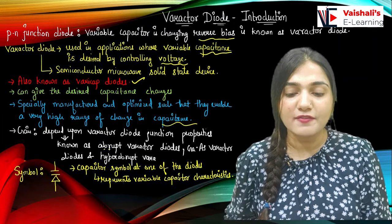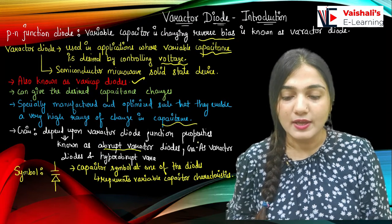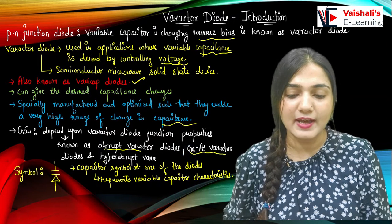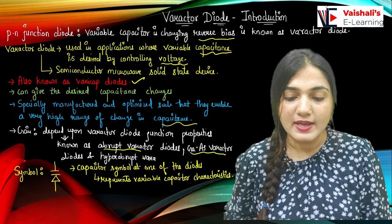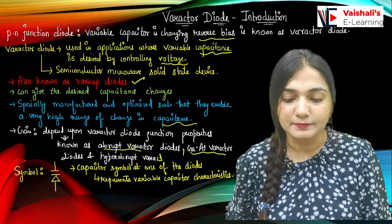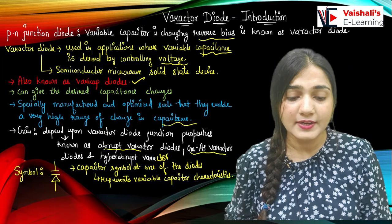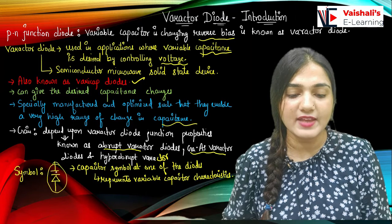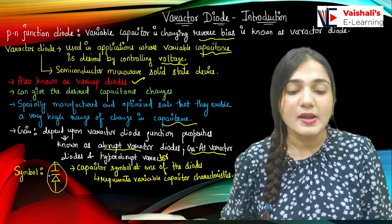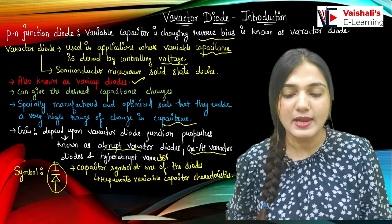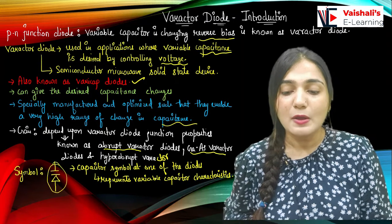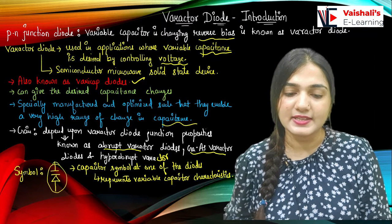It is known as an abrupt Varactor diode. It is also known as a gallium arsenide Varactor diode, or it is also known as a hyper-abrupt Varactor. The symbol will be like this — in the symbol you can see we have a standard diode symbol and above that we have a capacitor symbol, representing the variable capacitor characteristics.